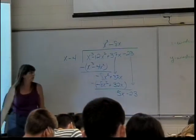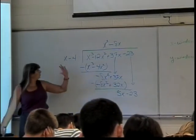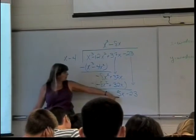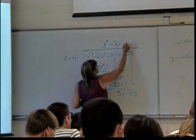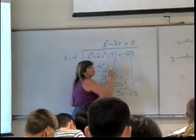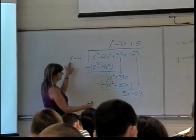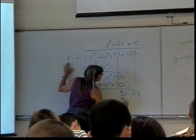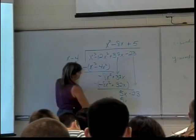And I do it again. X minus 4. Well, what do I need to multiply X by to get 5X? 5. So I'll have plus 5. 5 times X is 5X. 5 times negative 4 is negative 20.